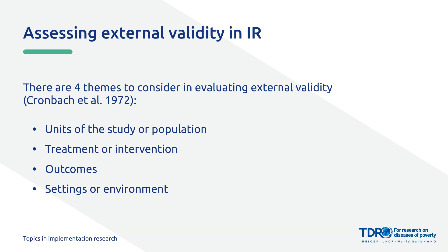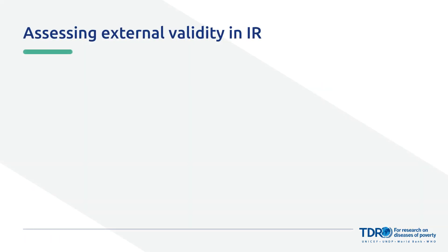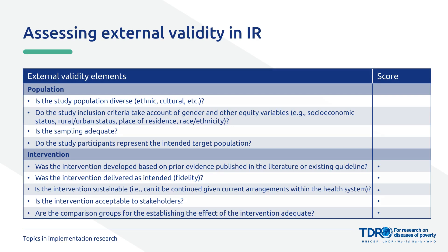Let's look at them in more detail, including questions researchers can ask themselves to assess the external validity of their study. Regarding population: Is the study population culturally and ethnically diverse? Does the study inclusion criteria take into account gender and other equity variables such as socioeconomic status or rural or urban status? Is the sampling adequate? And do the study participants represent the intended target population?